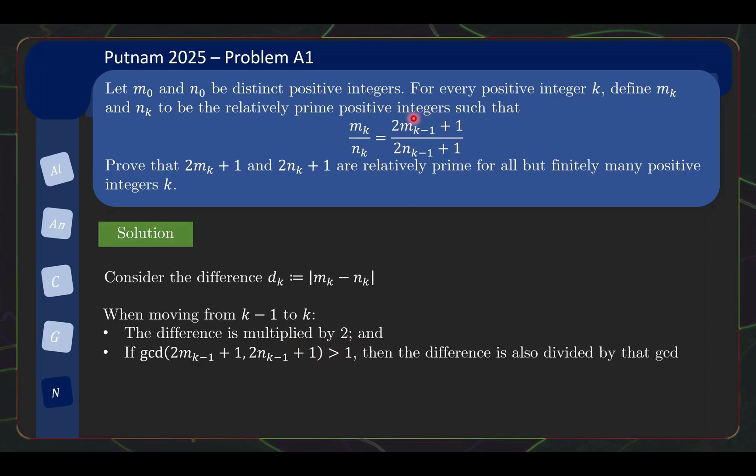If it's already in simplest form, then that's what happens to the difference. But if there's a common divisor between the numerator and denominator that is bigger than 1, then you are going to reduce it to simplest terms which means the difference is divided by that greatest common divisor. Now, the key observation here is that this greatest common divisor is between odd number and odd number so it has to be odd. So your difference is divided by some odd number. So you see what's the problem here now?